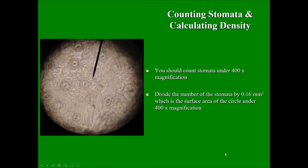I want to show you how the field of view would appear if you were looking under the microscope. You will be counting under 400 times magnification, and as you can see, the field of view in real time appears as circular. In that case, you will be dividing your count by 0.16 millimeter square, which is the area of a circle.